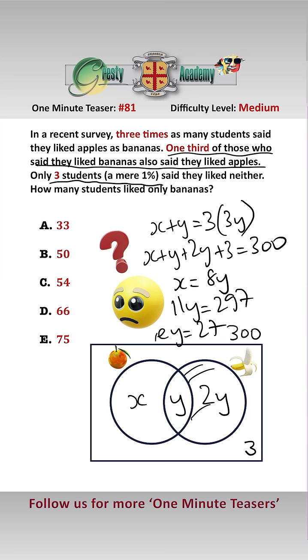Now we are looking, though, for this part, i.e., the number of students who liked only bananas, which is 2y. 2 times 27 is 54, therefore the answer is c, 54.